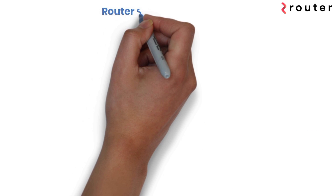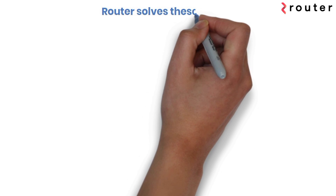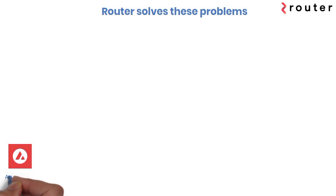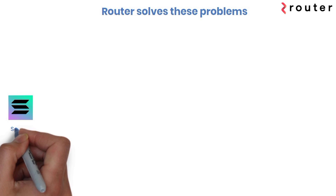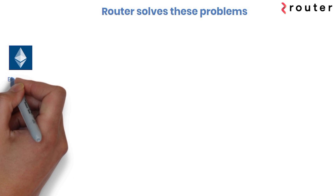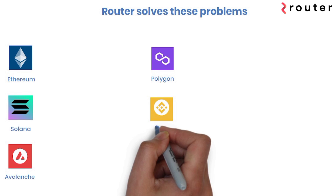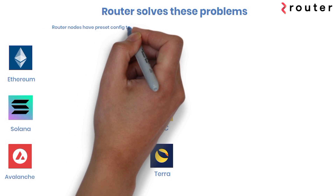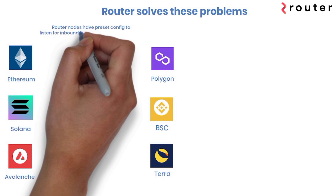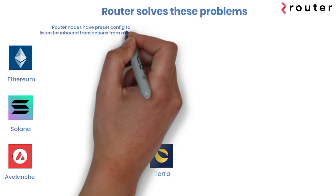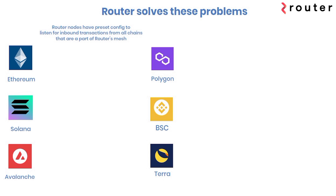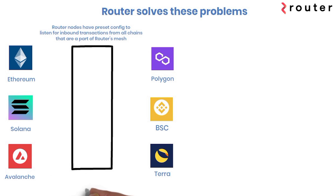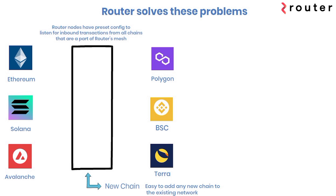Router nodes have preset arrangements for inbound transactions from all chains that are part of the Router's network or mesh. Router is modular in the sense that it is very easy to add any new chains to its existing network.